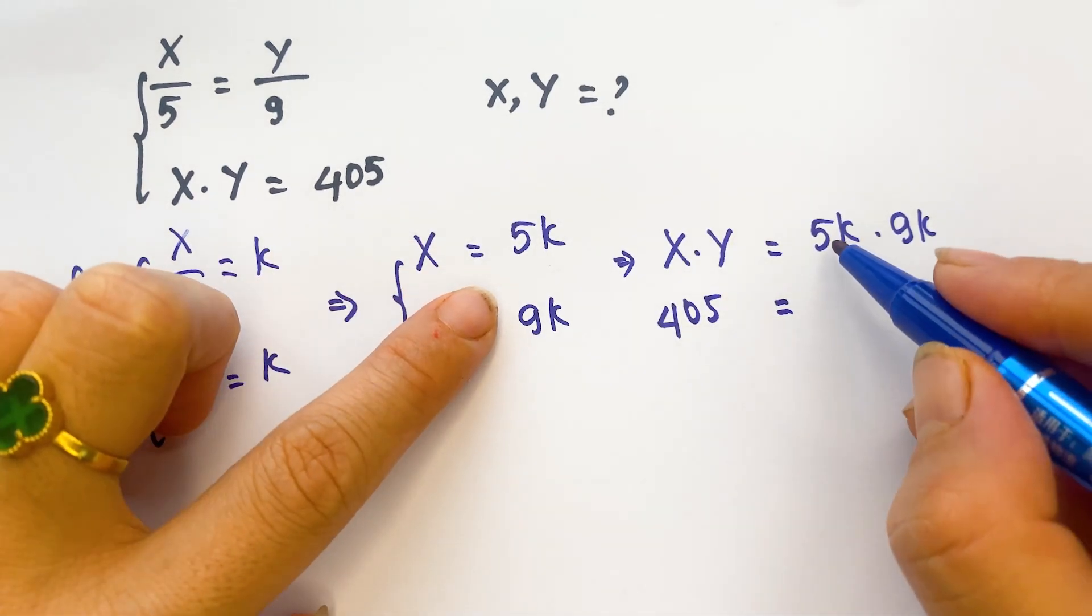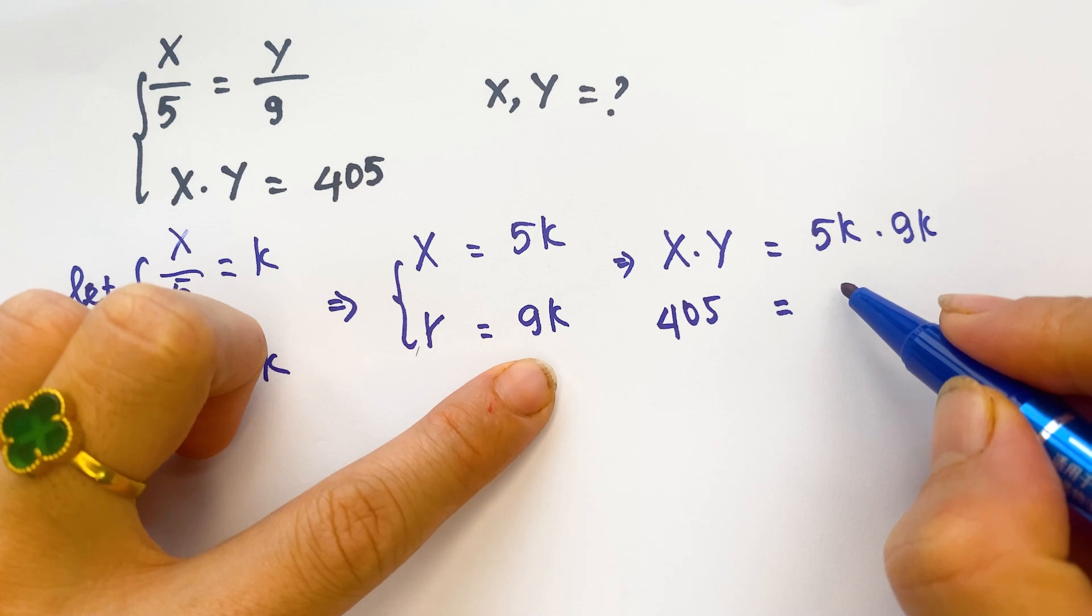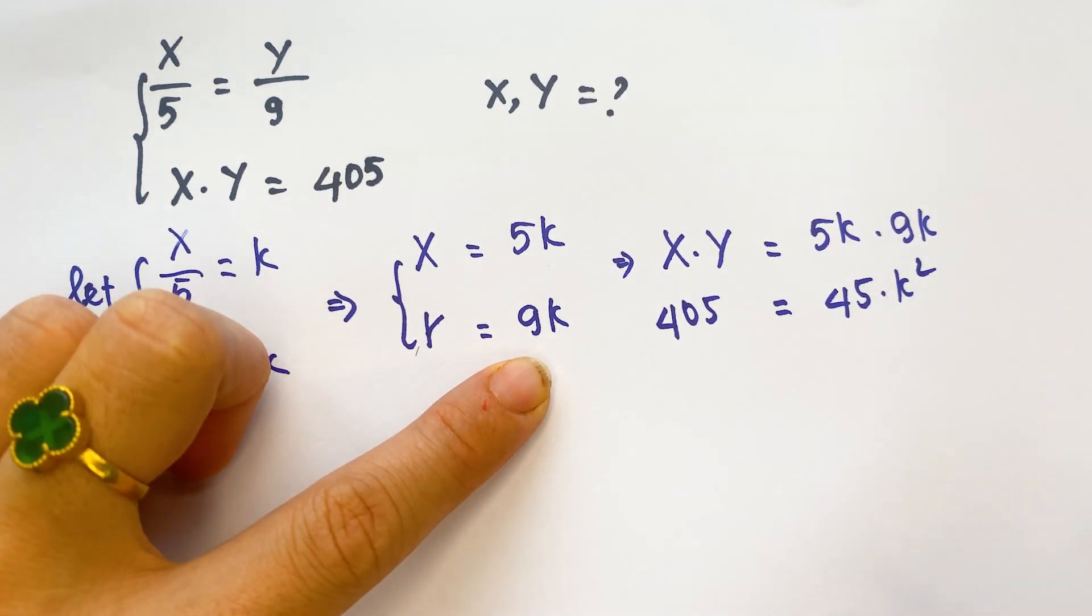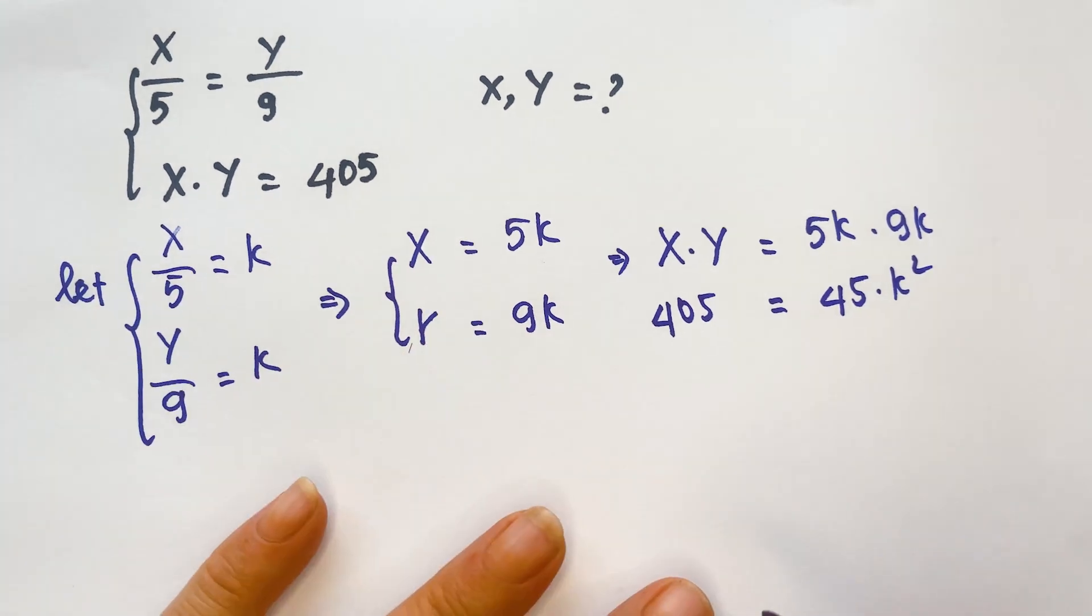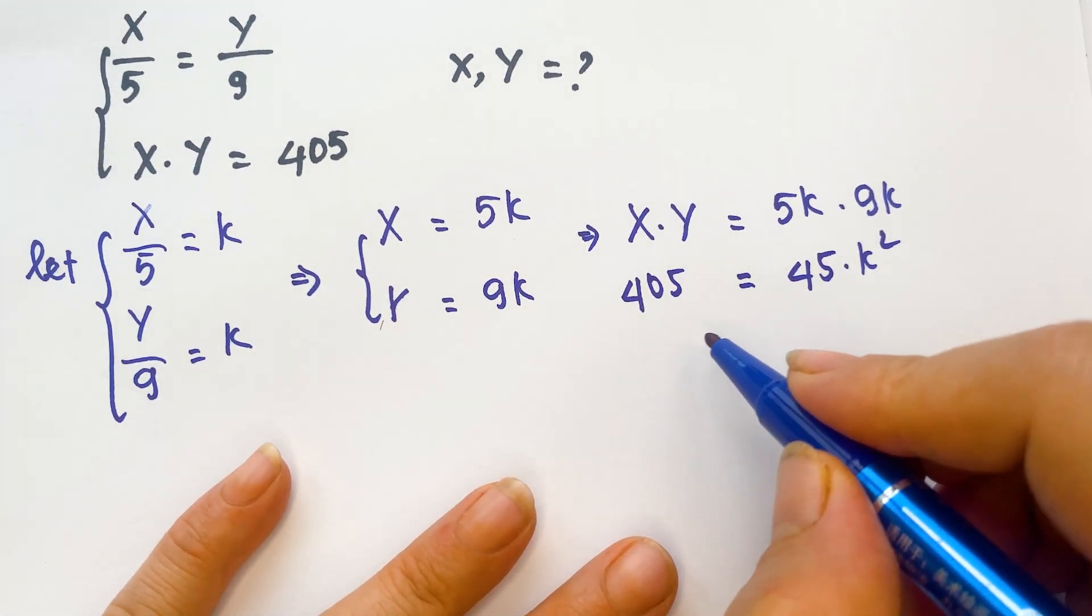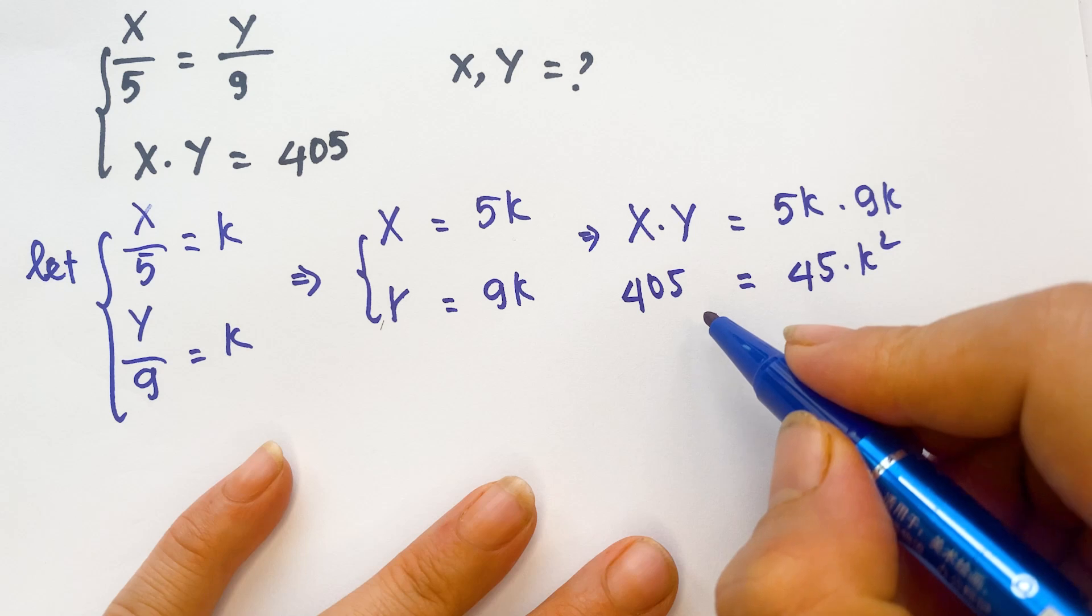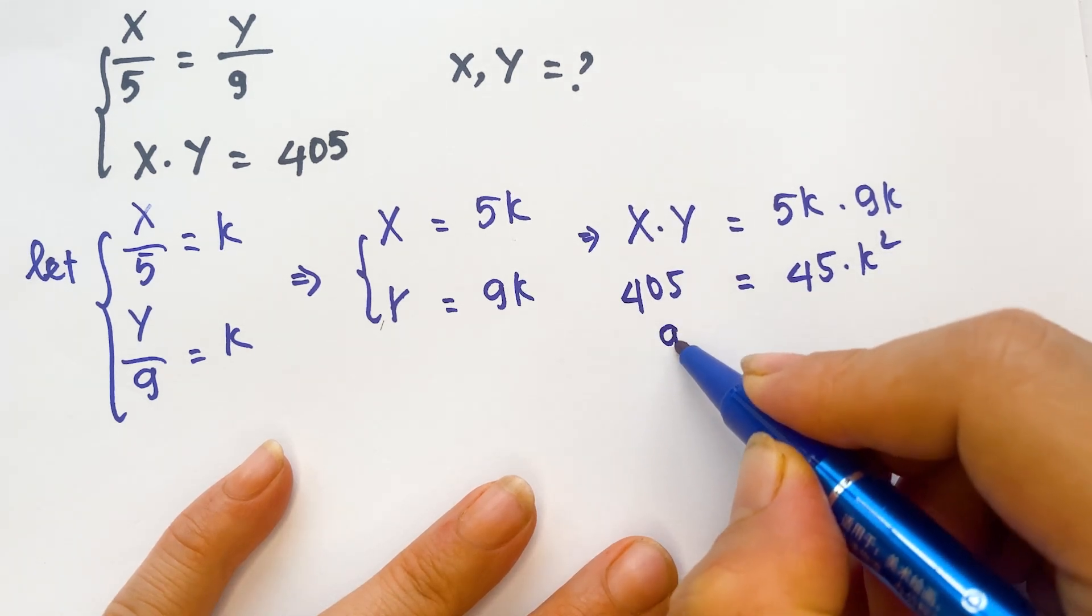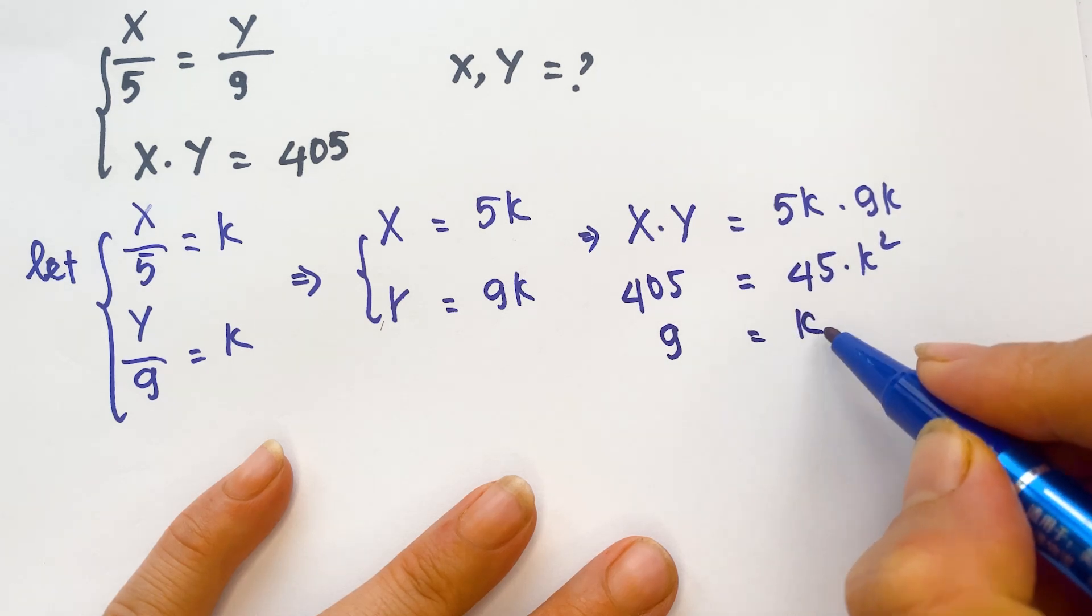And so here, 5 times 9 equals 45 times k squared. And then we can say we need to divide both sides by 45. So, on the right-hand side, you have 9 equals k squared.